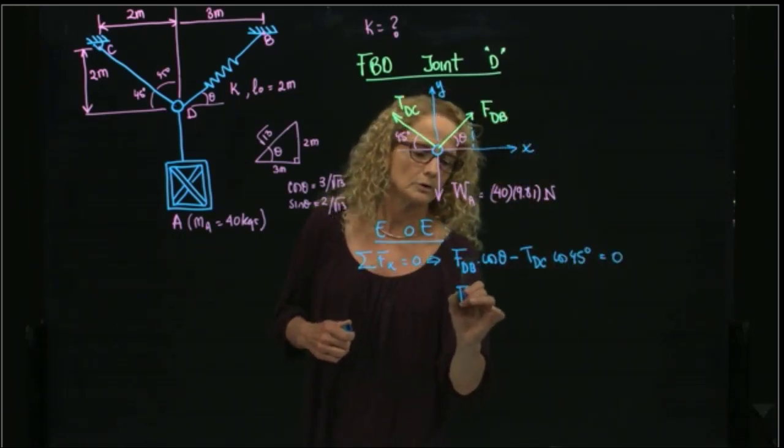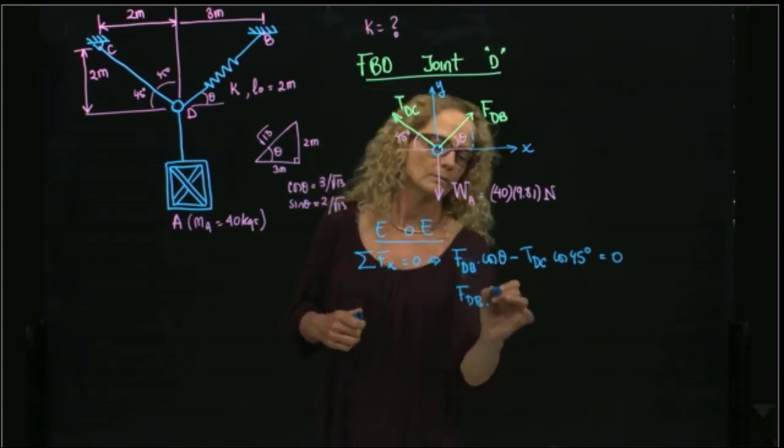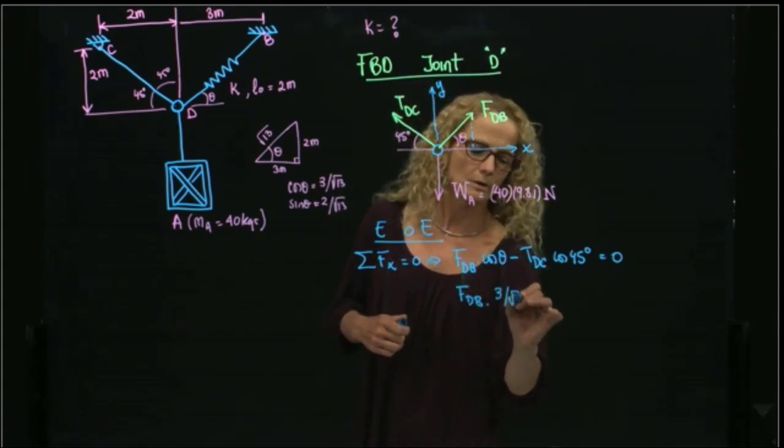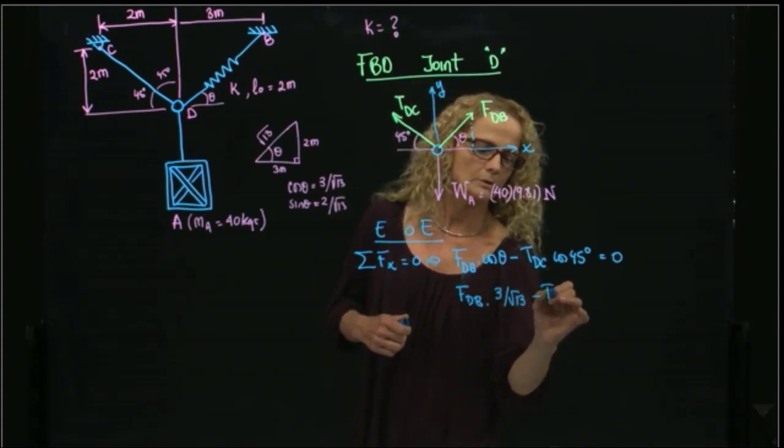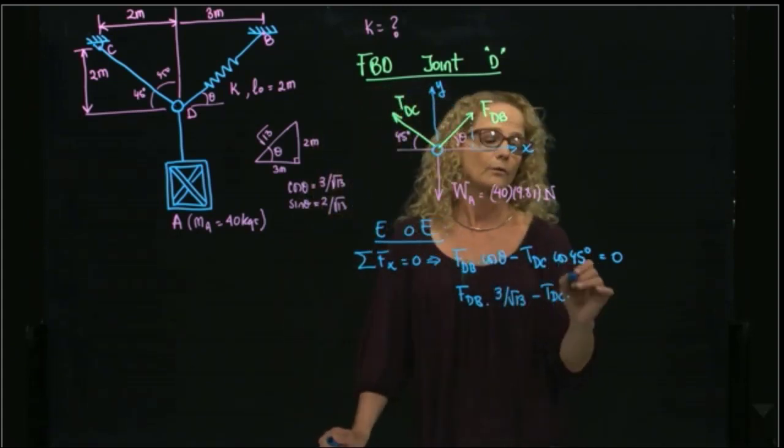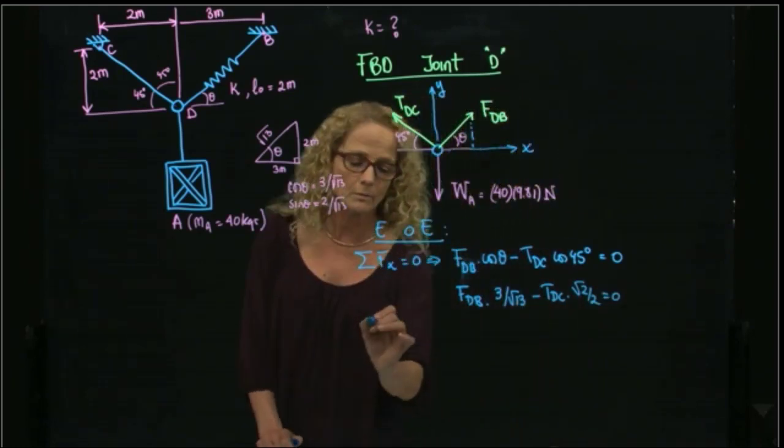So if I substitute here the values, this is cosine of this angle. I already said that it's 3 over square root of 13 minus tension, and the cosine of 45, you know that is square root of 2 over 2.